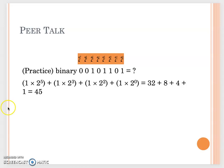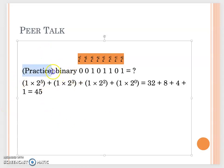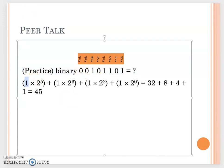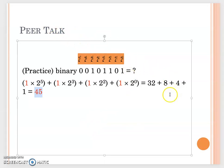Here is the next example — practice to find the decimal number, then pause the video and check your answer. You can see you have your 1s, multiply by the values, and after adding them all together, the final value is 45.